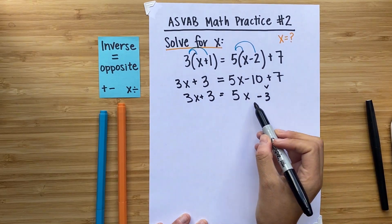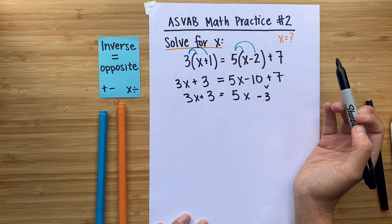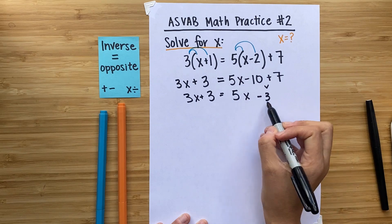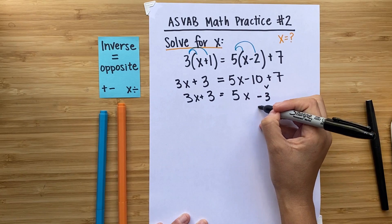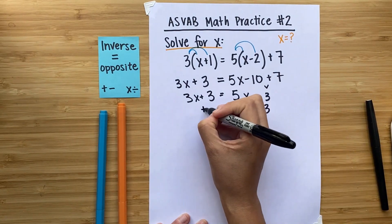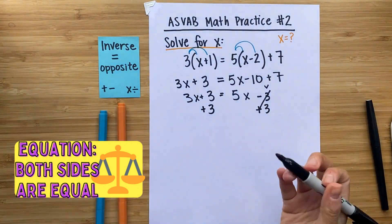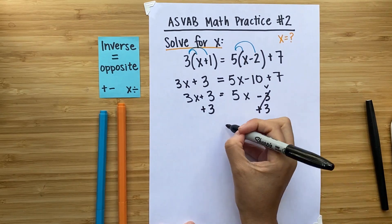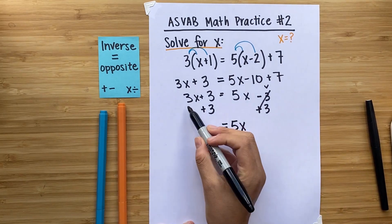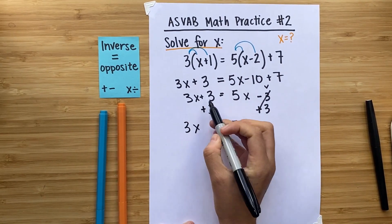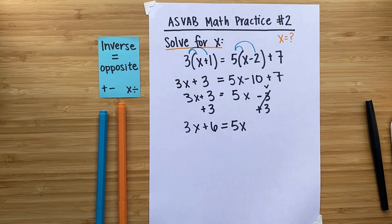And now we can start using inverse operations to isolate x or figure out what x is equal to. For me personally, I don't really like that I have this negative 3 over here. So the first thing that I'm going to do is I'm going to do the inverse of subtracting 3, which is add 3. What I do to one side of the equation, I have to do to the other side because they're equal. They're a balance. So negative 3 plus 3 is 0, which means that on this side of the equation, I just have 5x. And on the other side, I have 3x and 3 plus 3 will give me positive 6. So now my equation is 3x plus 6 is equal to 5x.